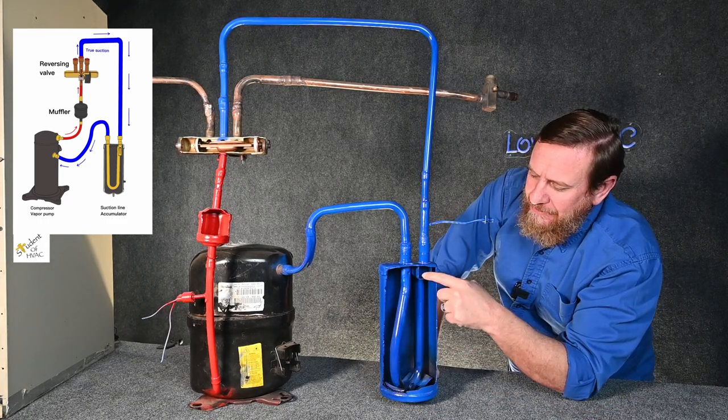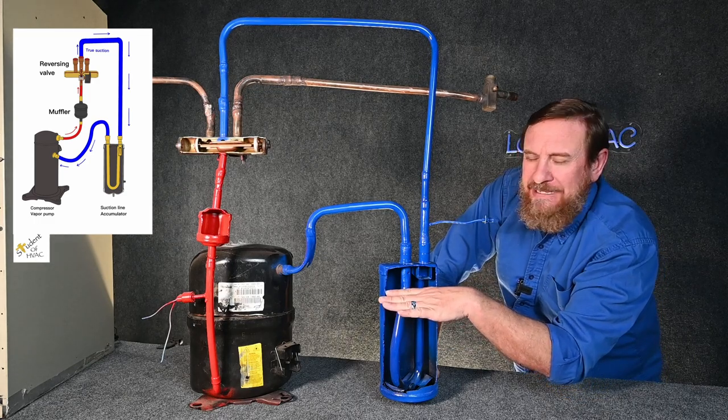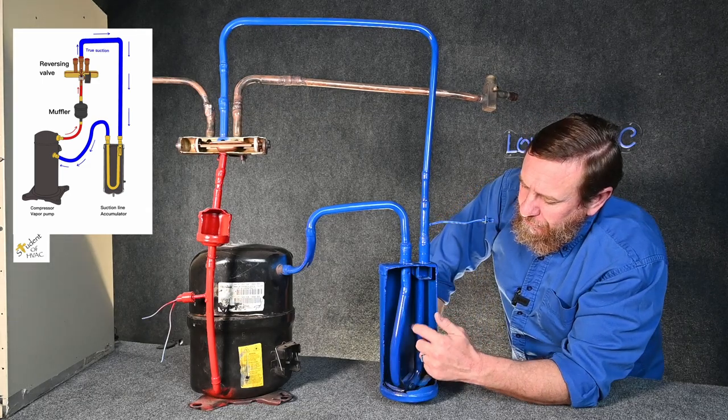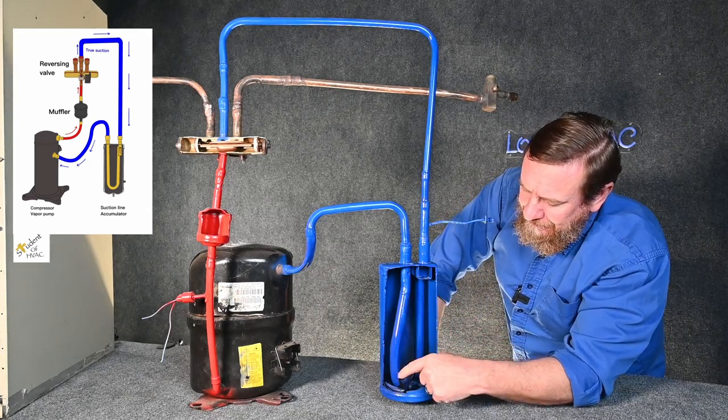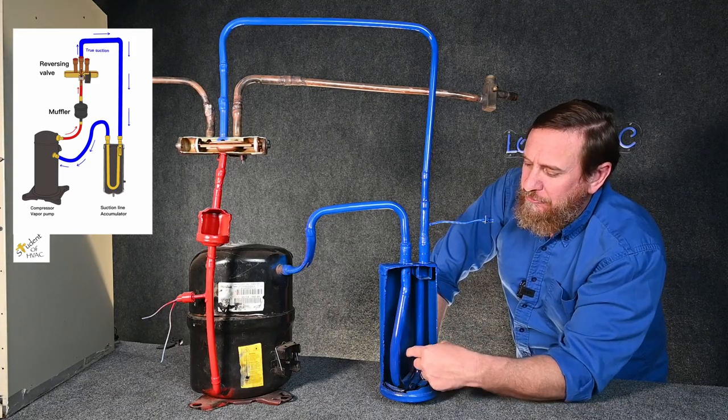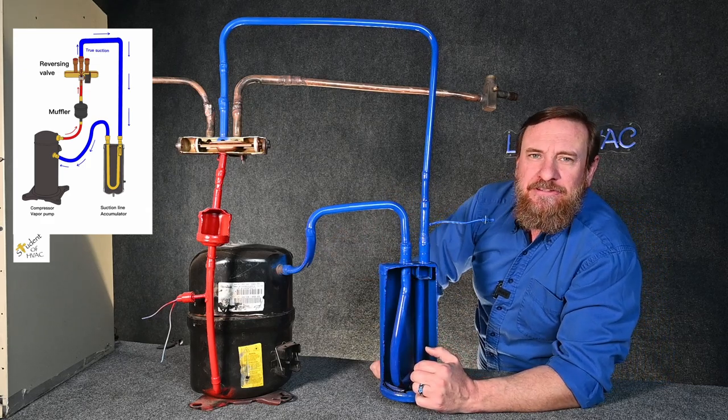So the suction comes in here, hits this little channel, and it opens up. If there's liquid refrigerant, the liquid refrigerant is going to be heavier. It's going to fall down over here to the bottom. But we want to pull only vapor off. So in this tube that has the output, it comes all the way down to the bottom, and on the back side is the intake for it. So it's pulling in just vapor from the top of this, and it's feeding back to the compressor.